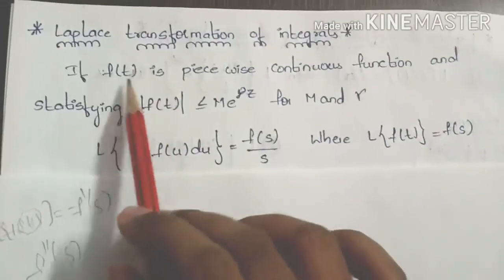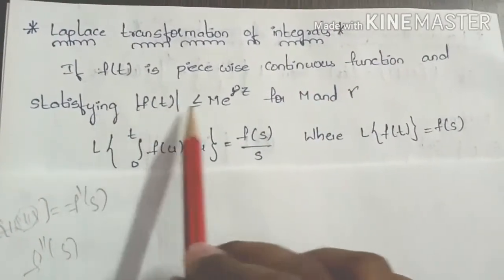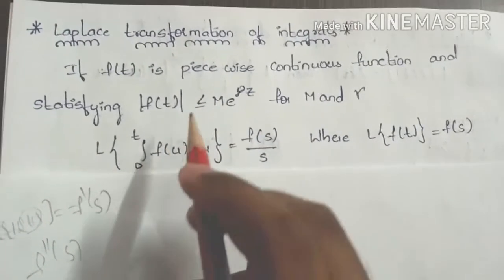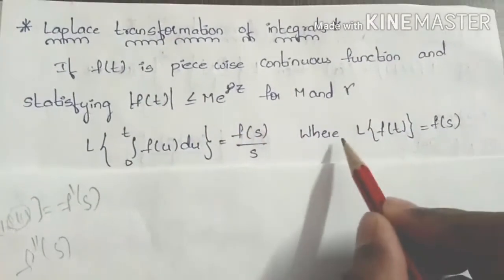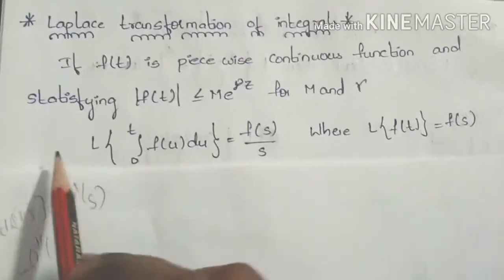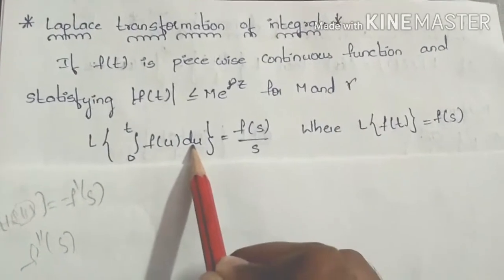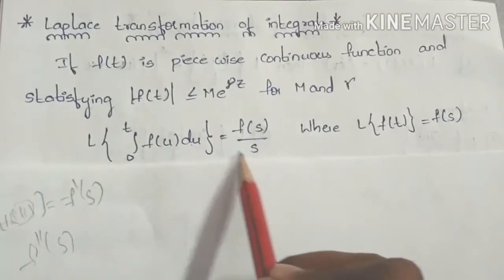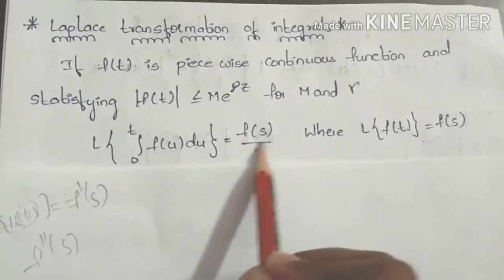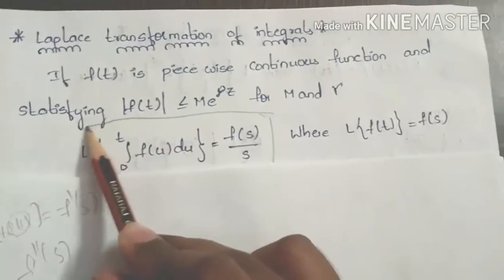The first thing to note: if f is a piecewise continuous function satisfying |f| ≤ M·e^(γt) for constants M and γ, then the Laplace transform of f(t) equals F(s). Then the Laplace transform of the integral from 0 to t of f(u) du is equal to F(s) divided by s.